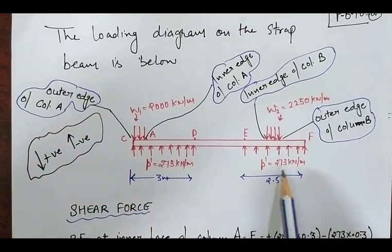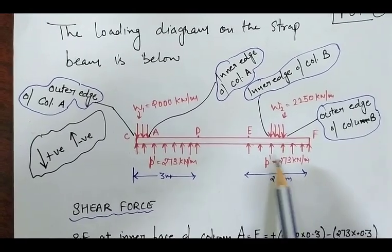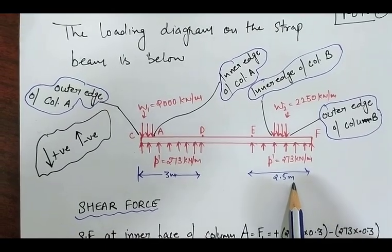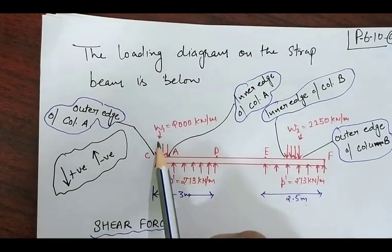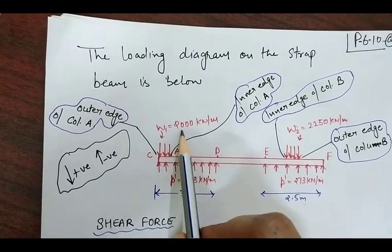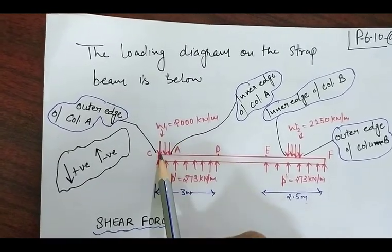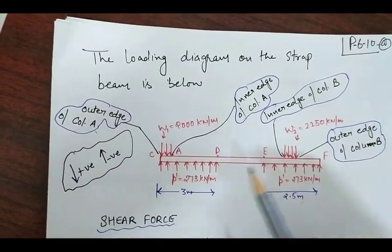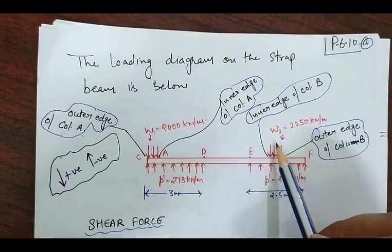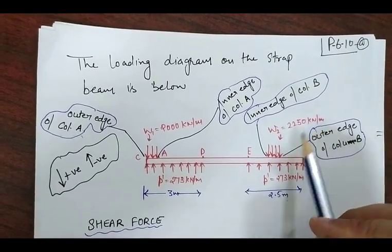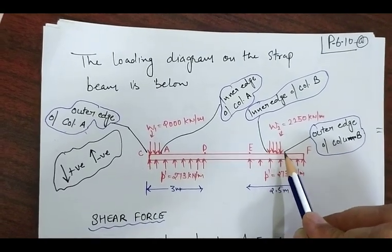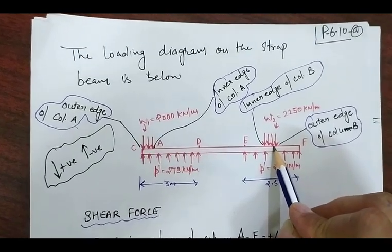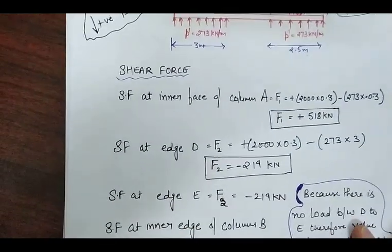The magnitude of soil pressure on spread B acts in the upward direction. The length of spread B is 2.5m. The UDL for column A, w1, is 2000 kilonewton per meter applied at the outer edge of column A. W2 is 2250 kilonewton per meter at the position of column B — these UDLs are drawn on the loading diagram.